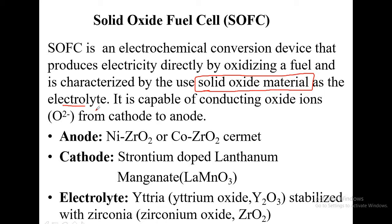The electrolyte is a solid oxide material. Whenever we speak about an electrolyte, it should be capable of conducting ions — just as sulfuric acid conducts H⁺ ions. Here in the solid oxide material, the ion capable of moving from one region to another is the oxide ion, O²⁻. So the electrolyte conducts oxide ions from cathode to anode.